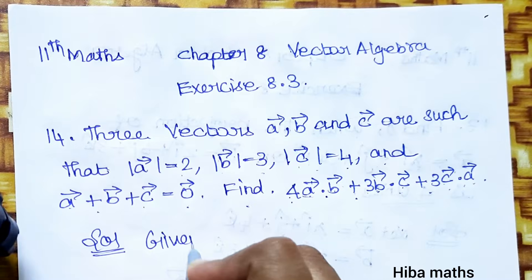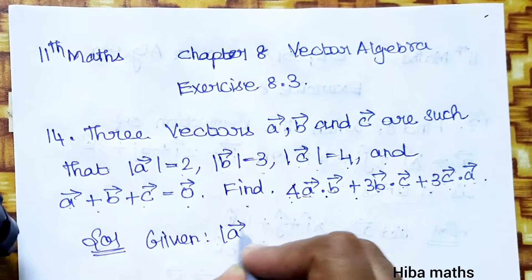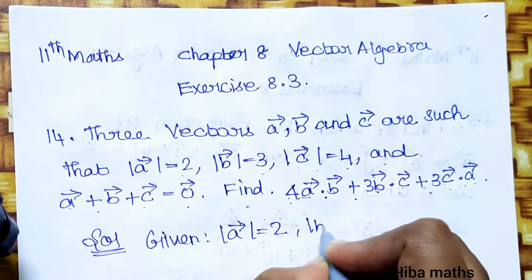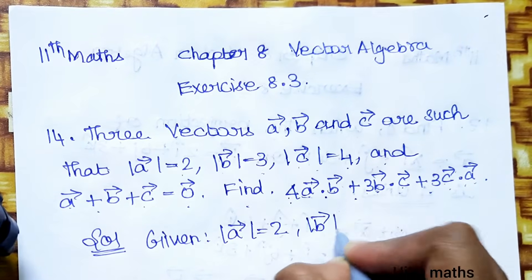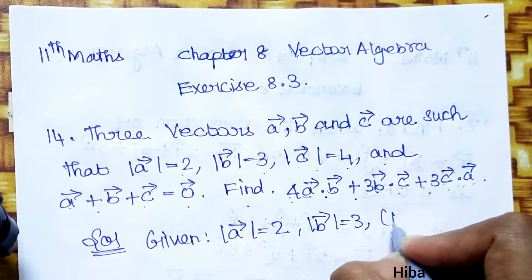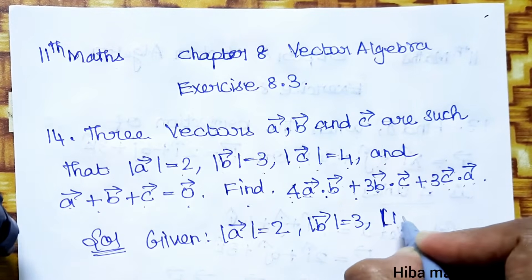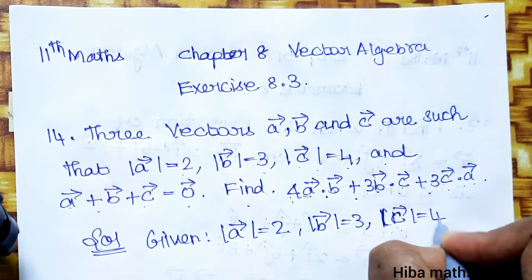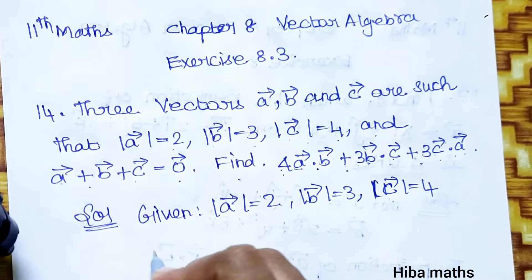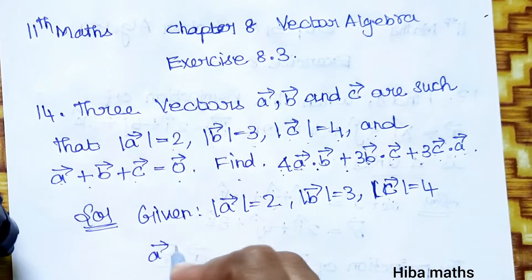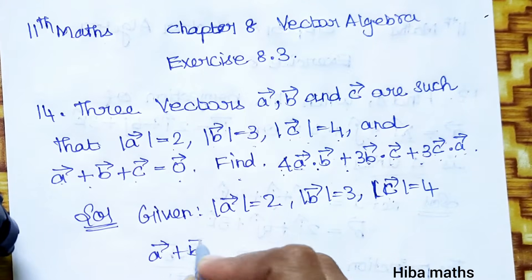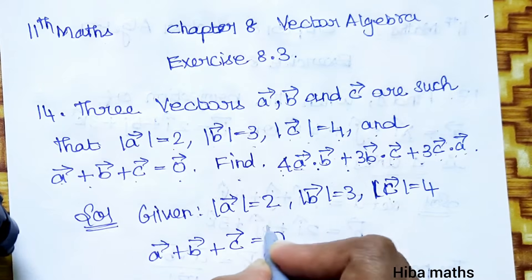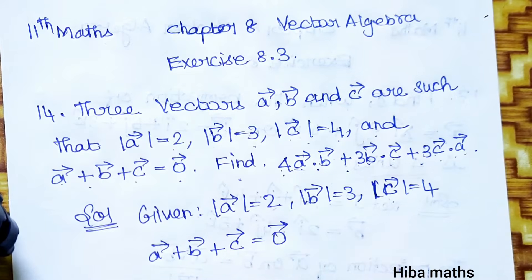Given: modulus of a vector = 2, modulus of b vector = 3, modulus of c vector = 4, and a vector + b vector + c vector = 0 vector.